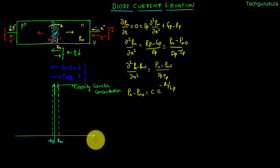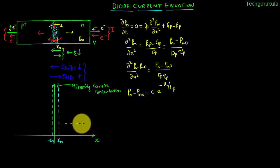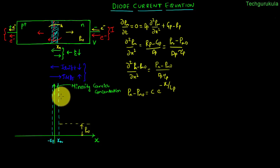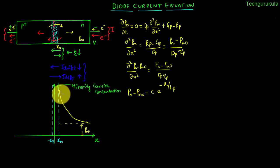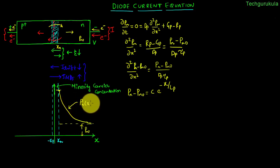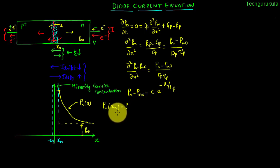We can represent minority carrier concentration with respect to distance, and p_n0 is the thermal equilibrium concentration. Because of the injection, carriers would be high at the junction edge, and as they diffuse they recombine and the carrier concentration decreases. The derived equation suggests that the carrier concentration decreases exponentially, which is why this graph looks this way. This graph would be for p_n(x). But what is the concentration of p_n at x_n? That is the question — if we know that, we can find what C is.